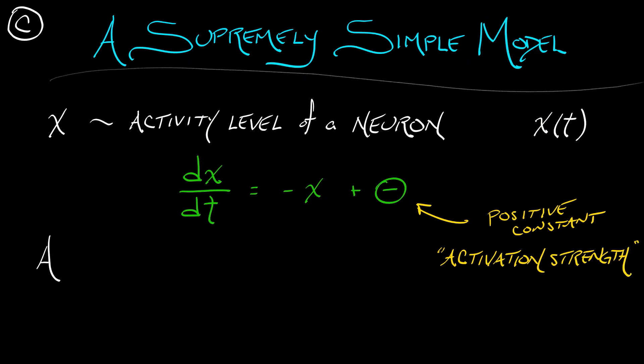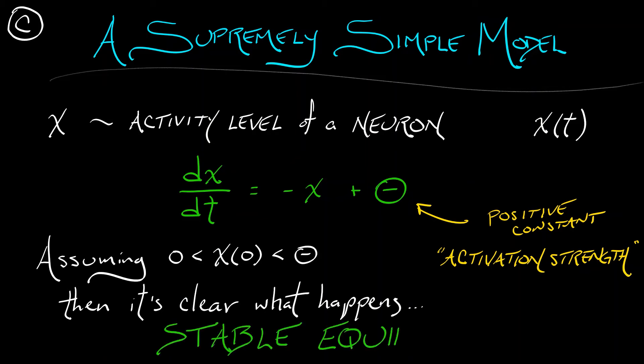Now, this is supremely simple. If we assume an initial condition that is positive but below this activation strength, it's clear what happens. This is an affine system. We have a single stable equilibrium. Well, that's boring. We need to come up with something more interesting than that.